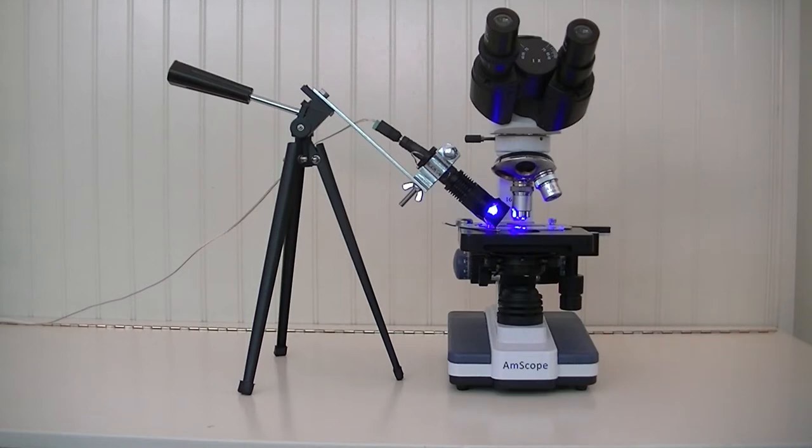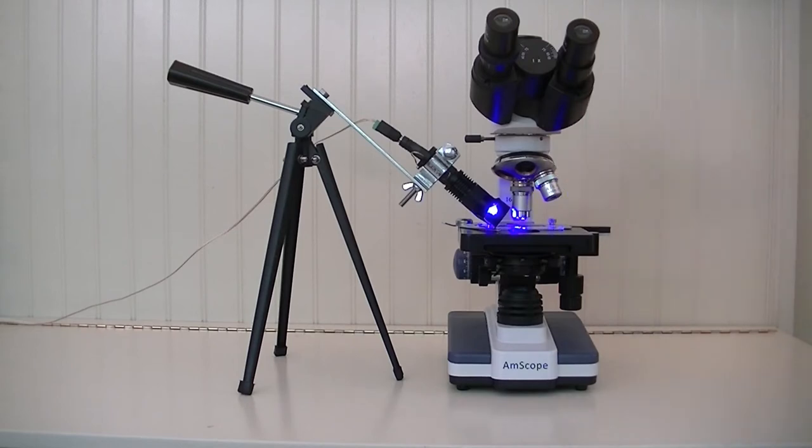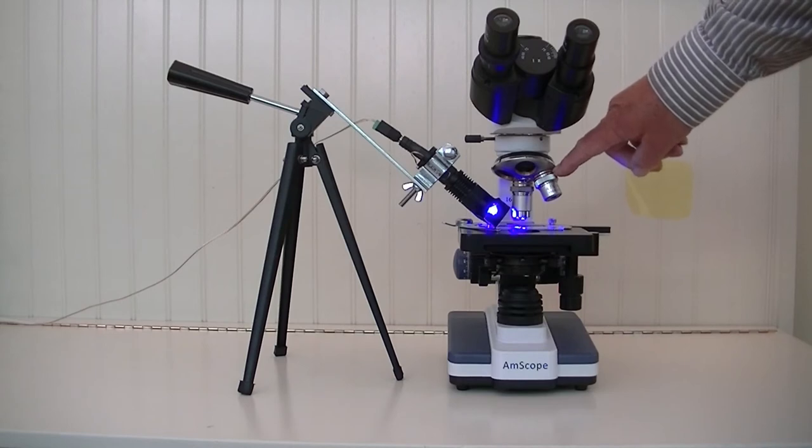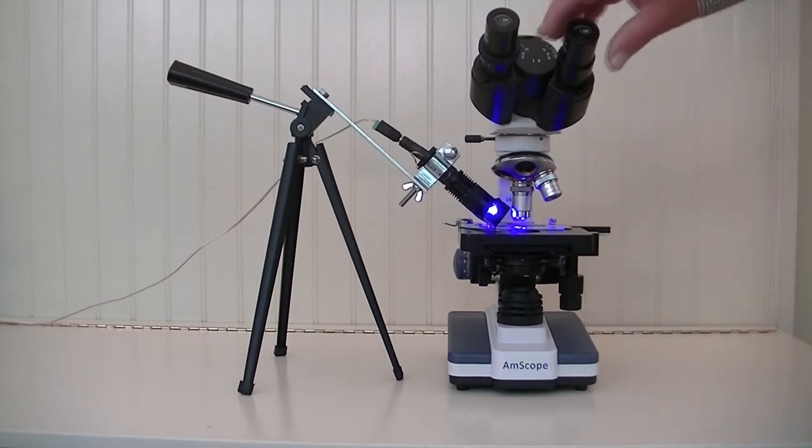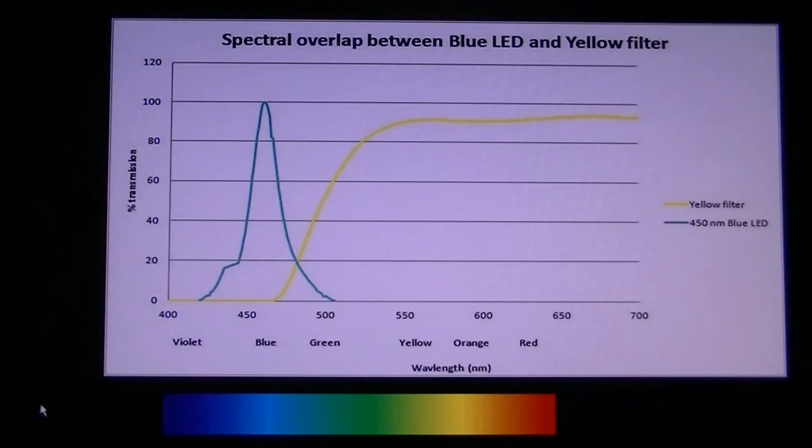If the microscope doesn't come apart at this joint here, then the other options are either to unscrew the objective and cut a piece of celluloid to the right shape and just insert it between the objective there, or take out an eyepiece and put a circular piece in there just temporarily with tape.